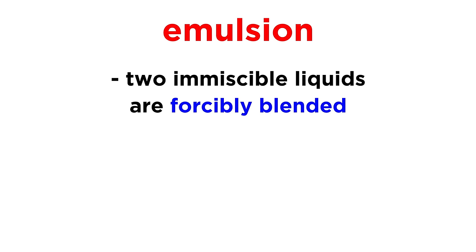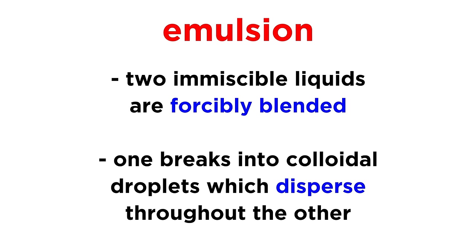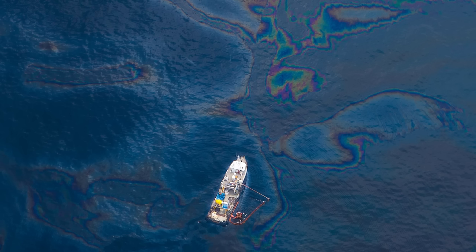Another type of colloid is called an emulsion. This occurs when two immiscible liquids are forcibly blended. One liquid will break into colloidal droplets and disperse throughout the other liquid. This is why oil spills in the ocean are hard to clean up. The action from waves causes emulsions to form.